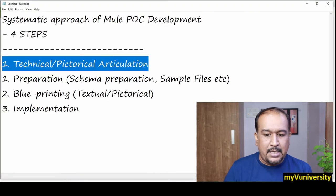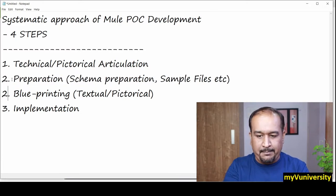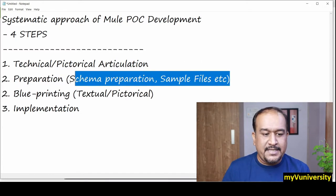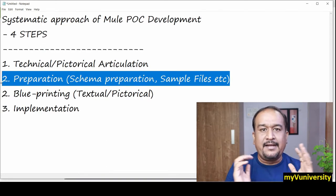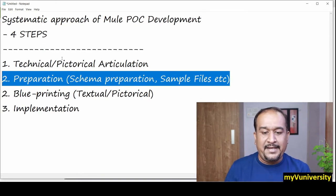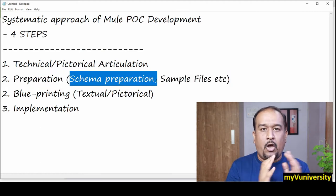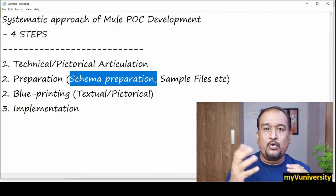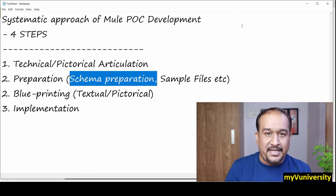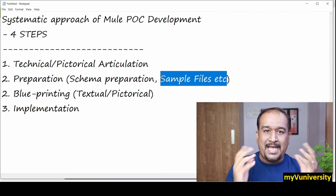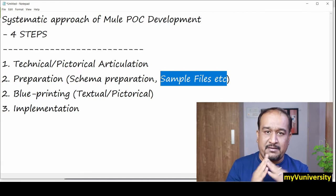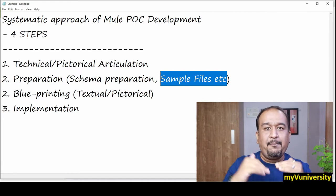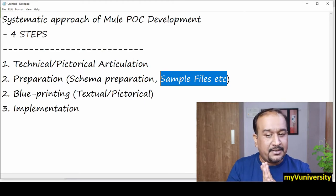This is about step number one. Now what is step number two? Step number two is preparation. To create this POC, you might have to create some tables or maybe you have to create some Salesforce object. In this example, we require a Salesforce object. Maybe you require some sample XML file, sample JSON file. In this example you need it, so keep them created, keep them ready. That's what is preparation before you move to the next step.